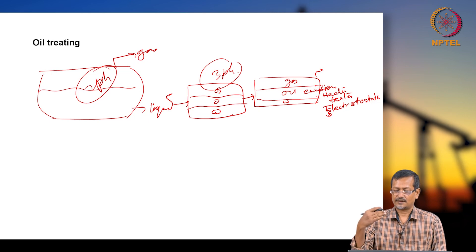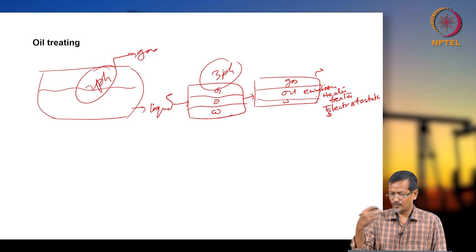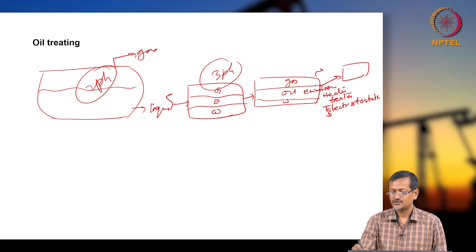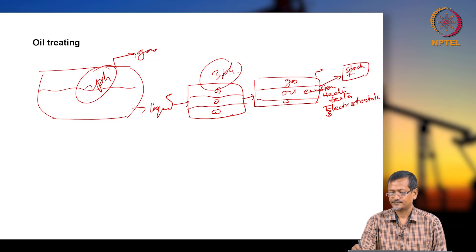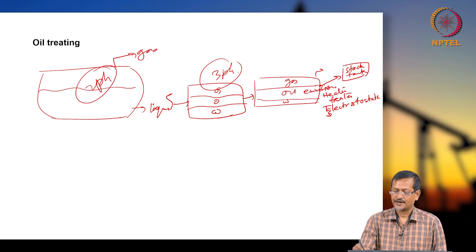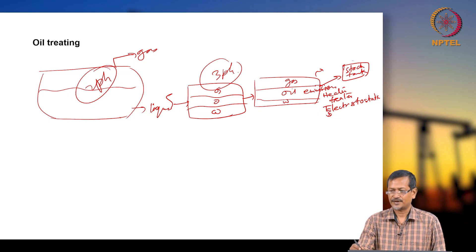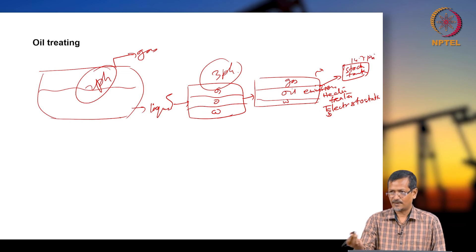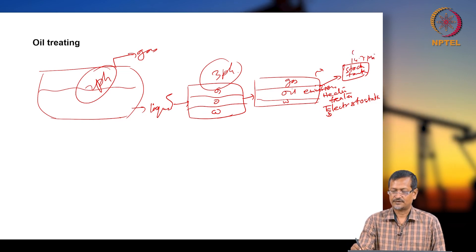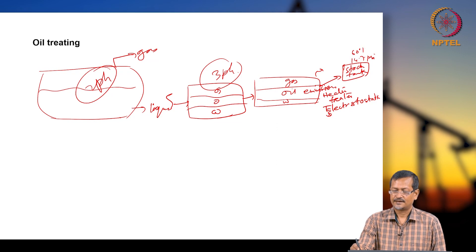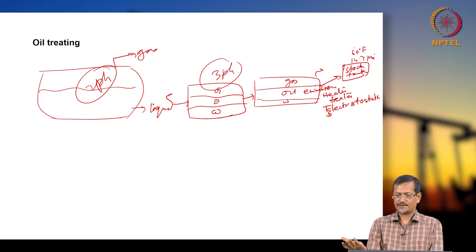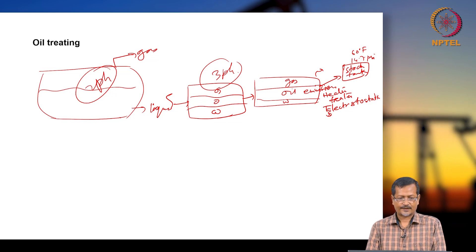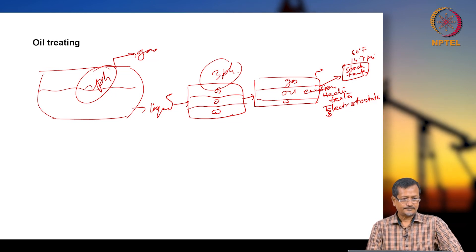Once oil has the gas and water part removed, you are putting it into the stock tank. The stock tank pressure will be 14.7 psi at normal temperature and pressure — ideally 60 degrees — but if atmospheric pressure and temperature is different, within that condition you are storing it.